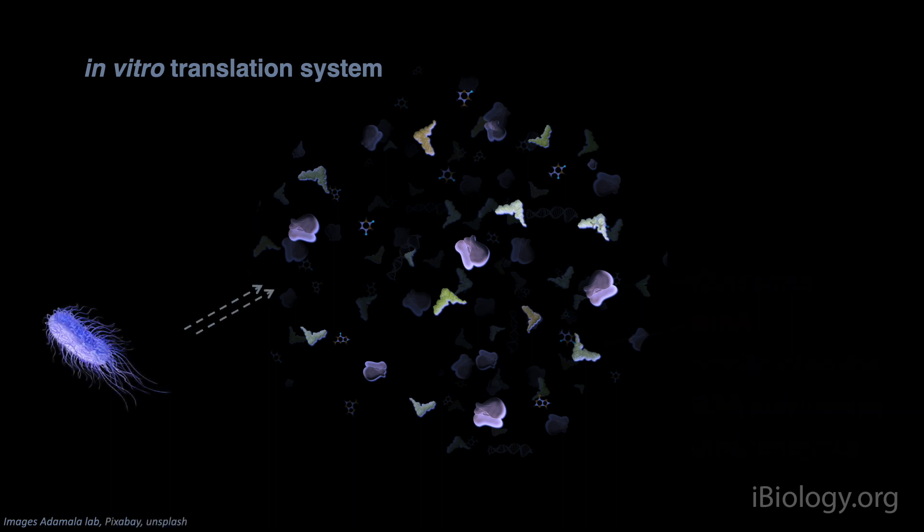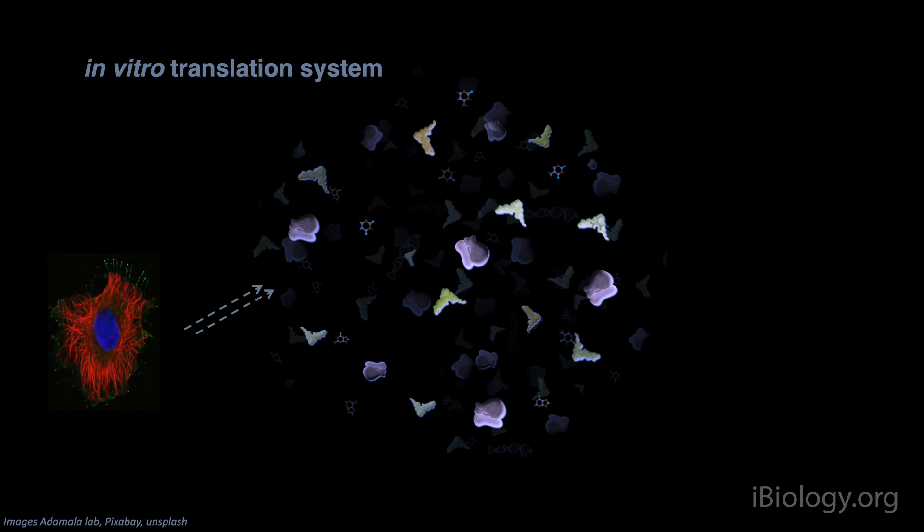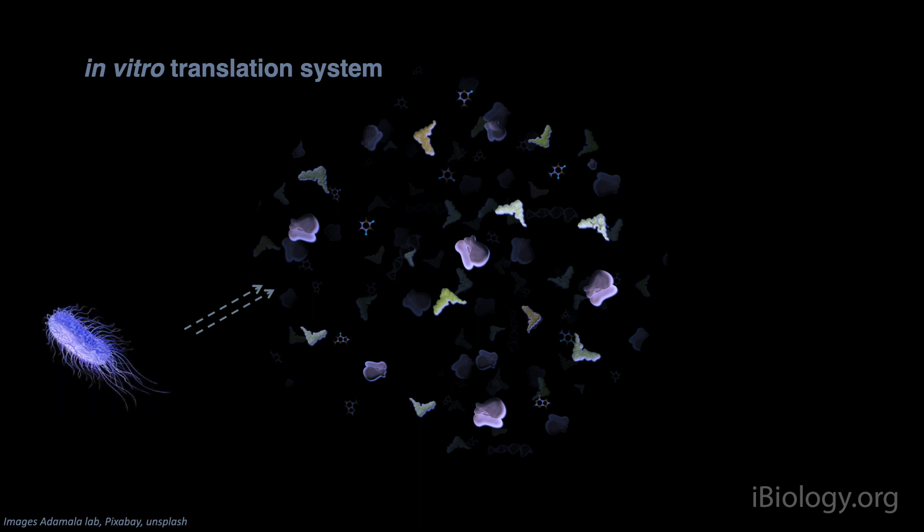The most commonly used in vitro translation system is made from components purified from bacteria. It's possible to use many different source organisms, though, all the way up to human cell-derived protein expression systems. The bacterial system is used because it's the fastest and cheapest one to work with.